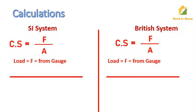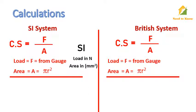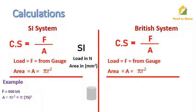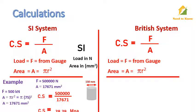Read the load from the gauge of the compressive strength machine and measure the area using this formula. In the case of SI system, consider load in newtons and area in millimeters squared. For example, we apply load to a cylindrical sample and it failed at 500 kilonewtons. Convert the load to newtons by multiplying it with 1000, so the load will be 500,000 newtons. The area can be calculated using this formula — radius is half of the diameter, and the diameter of the standard sample is 150 millimeters. By substituting values of pi and radius, we get the area in square millimeters. Now we have load and area, and from this we can calculate compressive strength in megapascal.